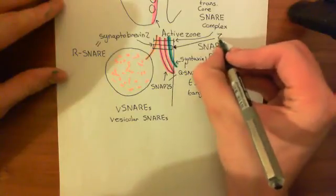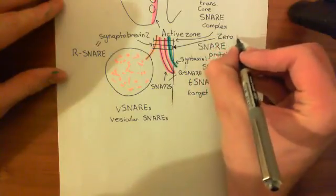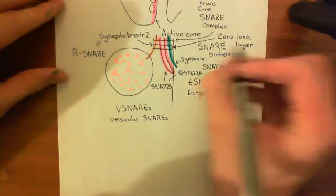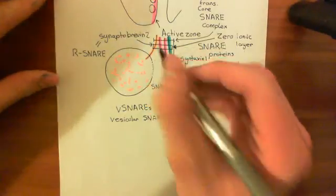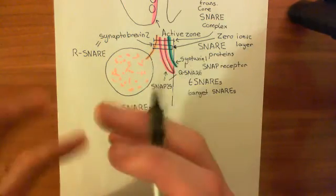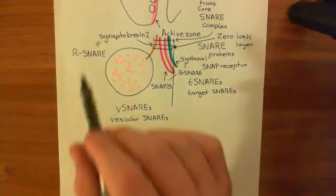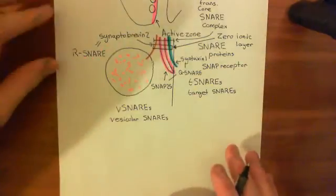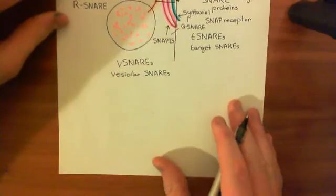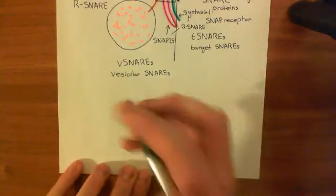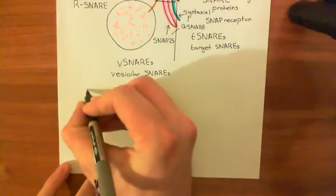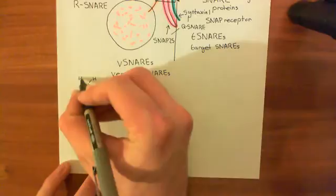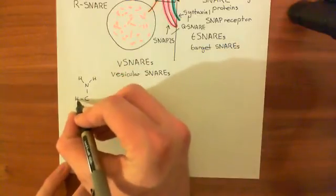Each one of these alpha helices contributes an amino acid that interacts at the zero ionic layer. Synaptobrevin-2 supplies arginine. The structure of arginine begins with the basic amino acid structure — an alpha carbon, an amino group, a hydrogen off the alpha carbon, and a carboxylic acid group. The R group of arginine consists of three methylene groups, then a nitrogen atom with a hydrogen, then a carbon with an amino group and a double bond to a nitrogen-hydrogen.